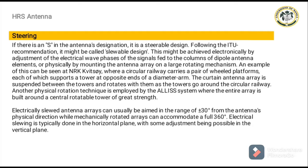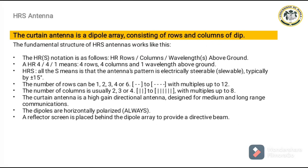Electrically slewing is usually performed in the horizontal plane, with some vertical modification possible. The curtain antenna is a dipole array consisting of rows and columns. The HRS notation works as follows: H = rows, R = columns, and height in wavelengths above ground. For example, HR 4 4 1 means 4 rows, 4 columns, and 1 wavelength above ground. The S in HRS means the antenna pattern is electrically steerable, typically by 15 degrees. The number of rows can be 1, 2, 3, 4, or 6, with multiples up to 12. The number of columns is usually 2, 3, or 4, with multiples up to 8. The curtain antenna is a high-gain directional antenna designed for medium and long-range communication, with horizontally polarized dipoles and a reflector screen placed behind the dipole array to provide a directive beam.